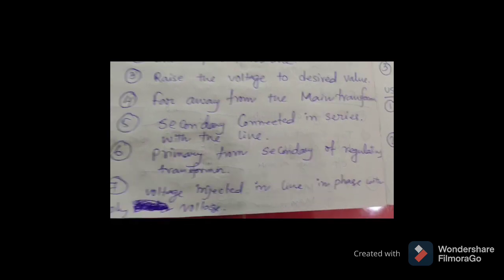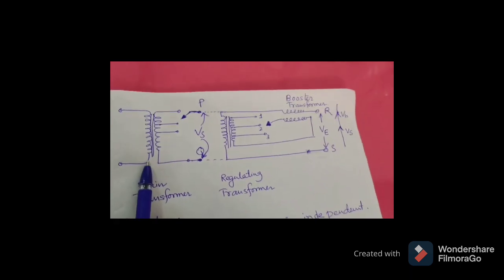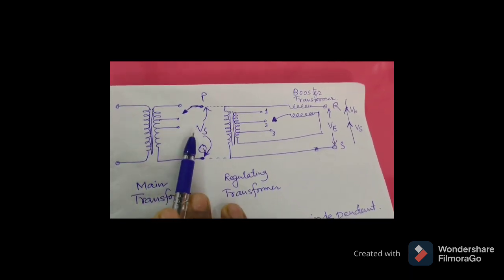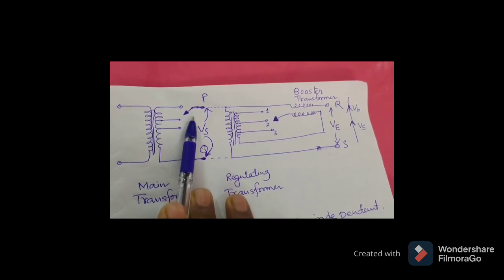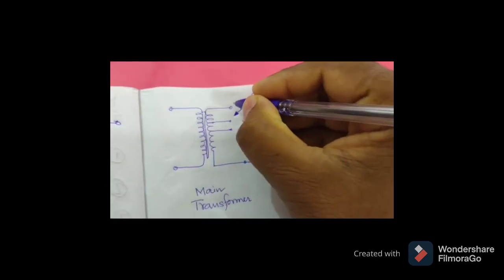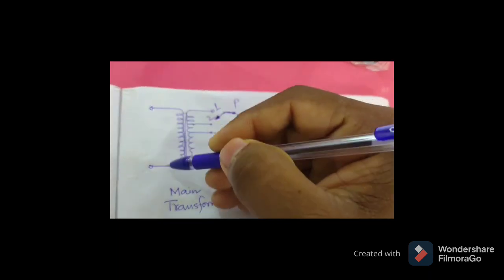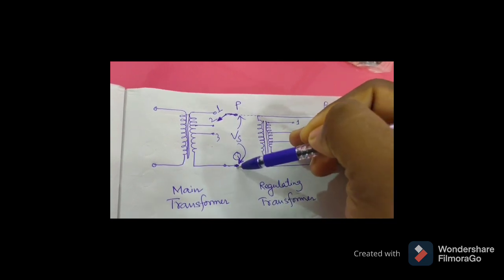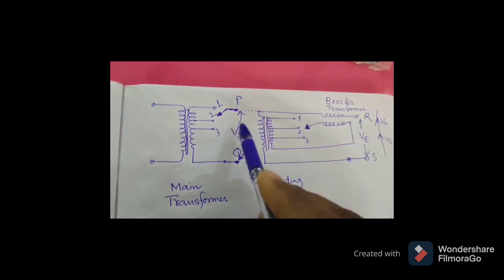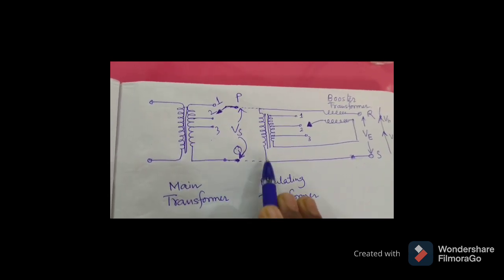The voltage injected in the line is in phase with the supply voltage. This is the main transformer, showing its primary and secondary. These are the taps — tap changing equipment with taps one, two, and three. We connect the taps as per our requirement. From the secondary side of the main transformer, the output voltage is Vs. The dotted line indicates that the regulating transformer is far away from the main transformer.